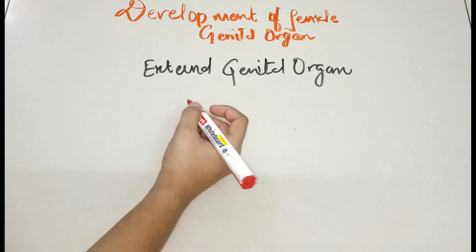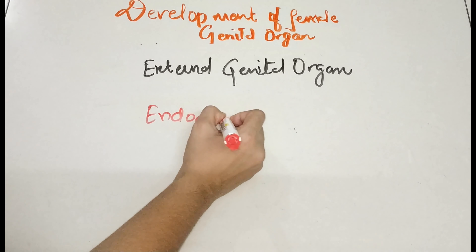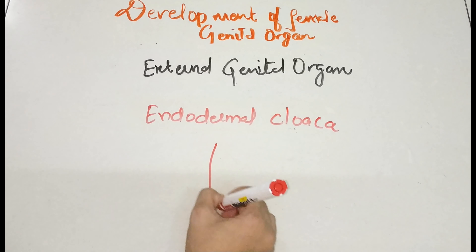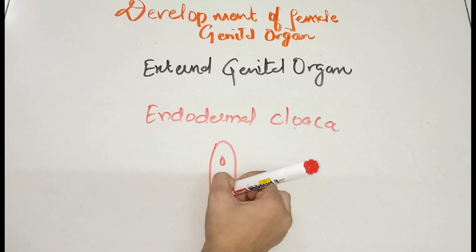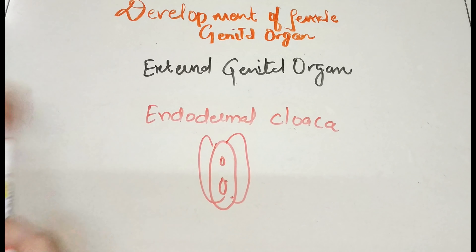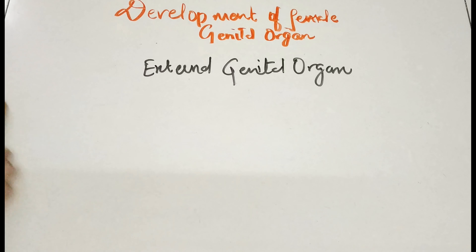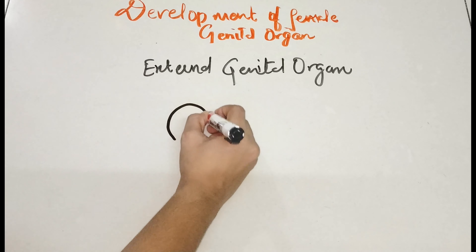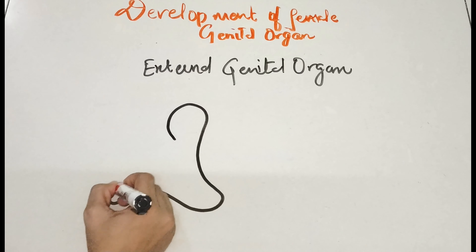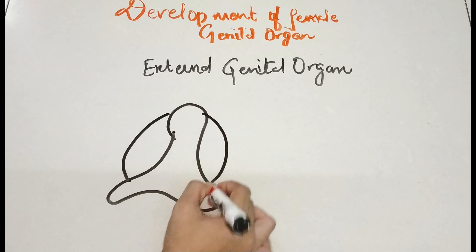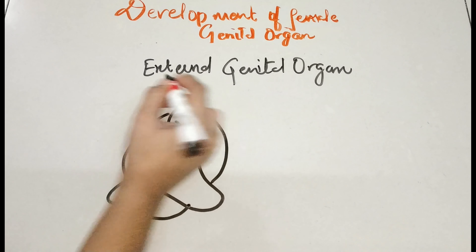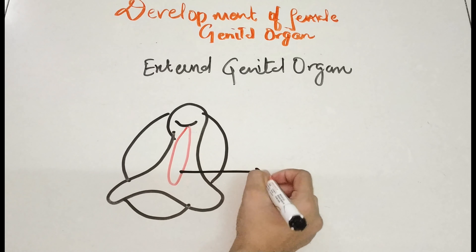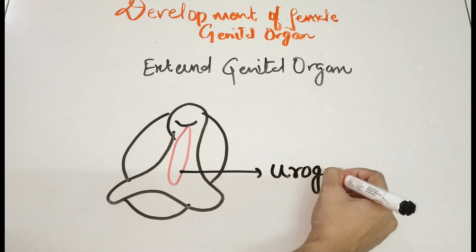The endodermal cloaca is divided and forms the external genital organs, which we are going to see how they form. During the development phase in embryology, the cloaca has swellings and an important structure called the urogenital slit.